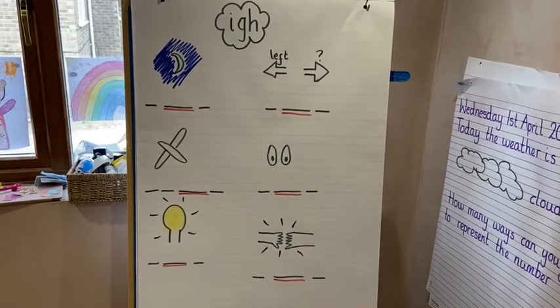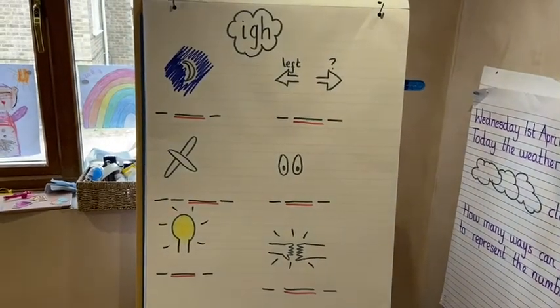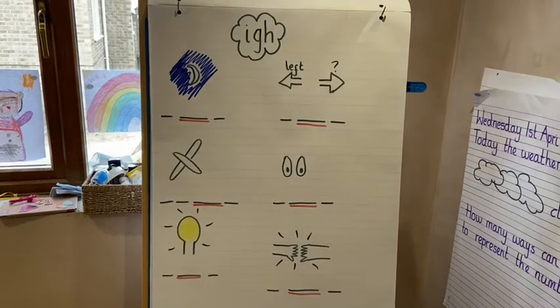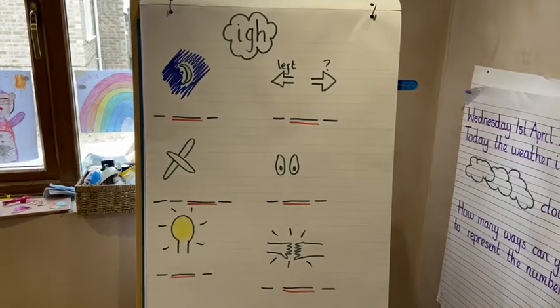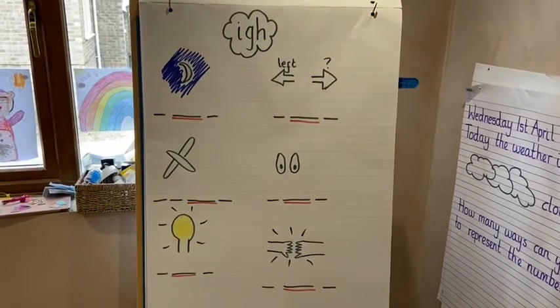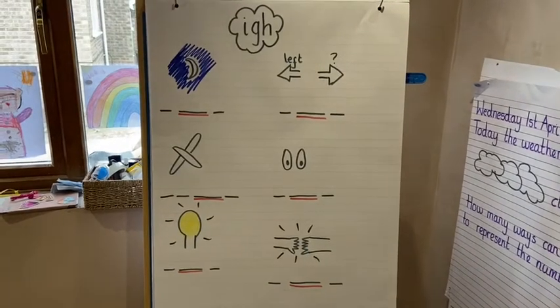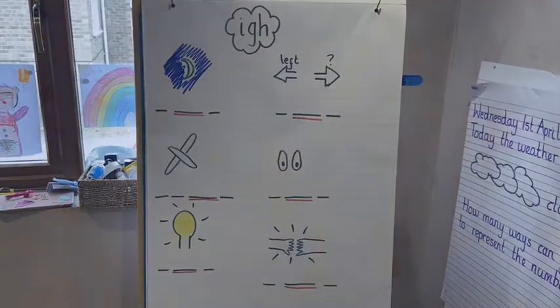But your sentence must have finger spaces, capital letters where they should be, full stops, your letters should be the same size, and they should be sat on the line. Have a go.